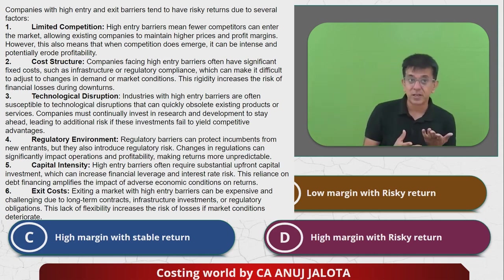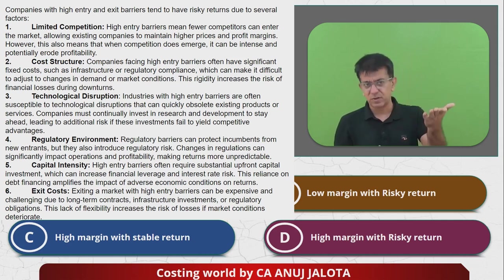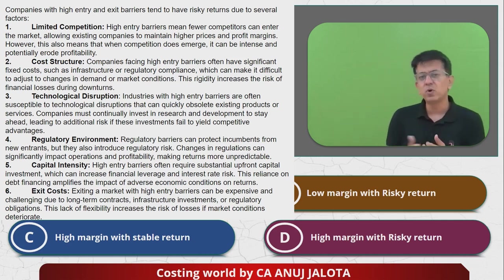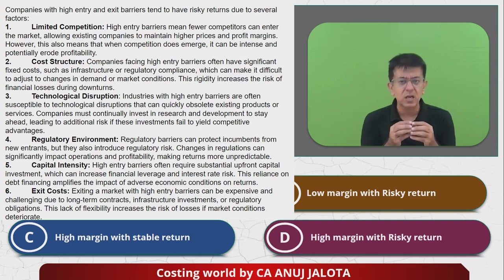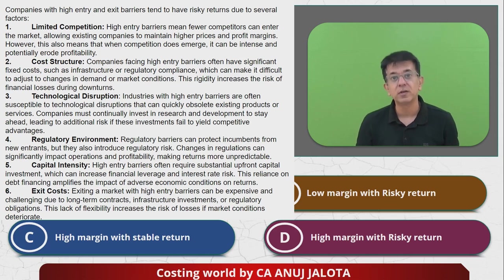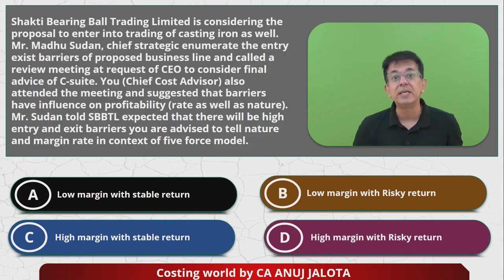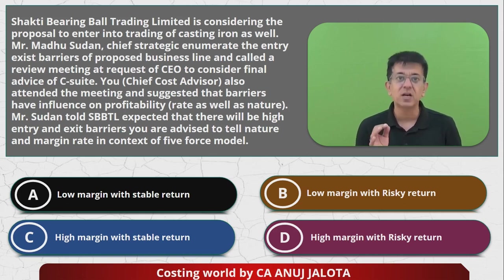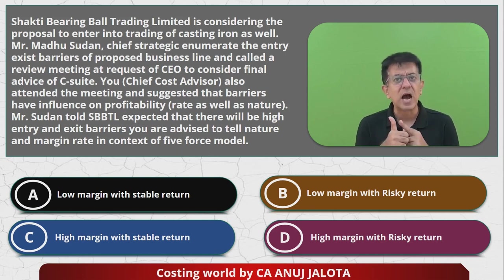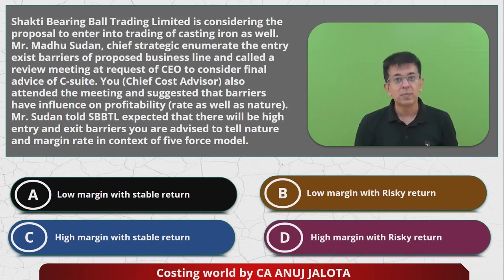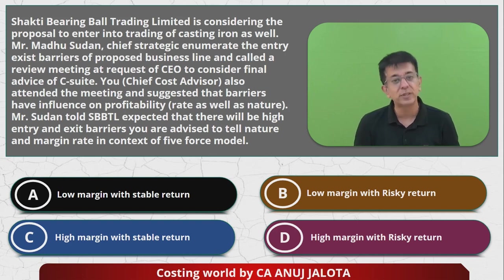Regulatory environment, capital intensity, and exit costs also make returns risky. So out of the four options, the correct answer is D — high margin with risky returns. If a company is in an industry with high entry barriers and high exit barriers, their returns will be very high, but those returns are going to be quite risky. So the answer is D.